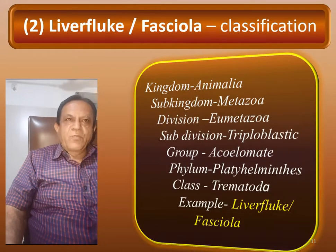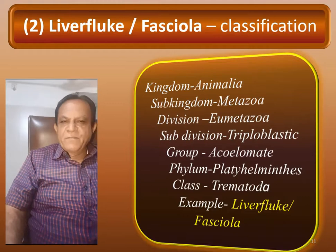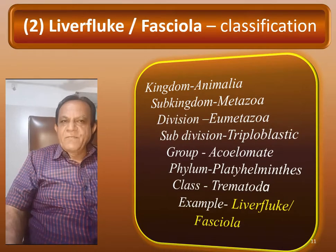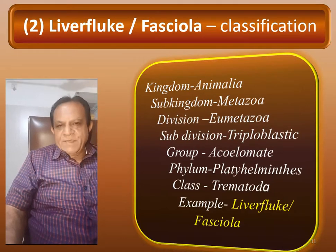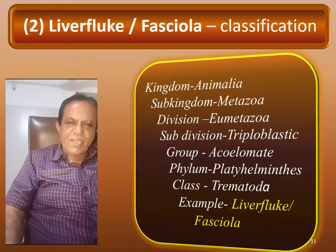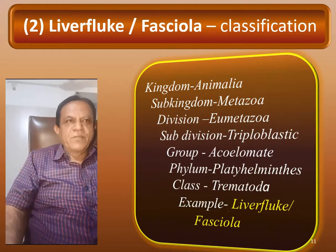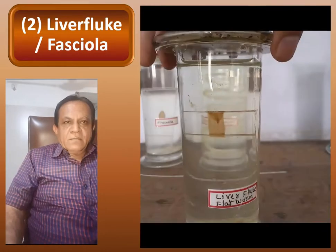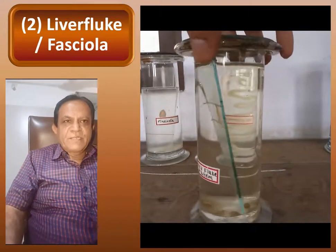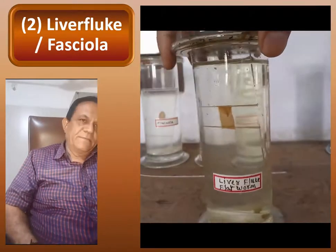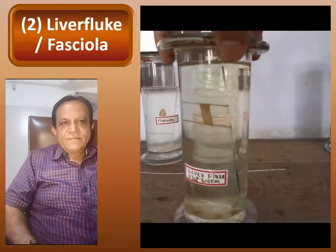Now the second animal, Liver fluke or Fasciola: Kingdom Animalia, Sub-Kingdom Metazoa, Division Eumetazoa, Sub-Division Triploblastic, Group Acoelomate, Phylum Platyhelminthes — up to this level classification will be the same for all examples. Only the class changes. So Class Trematoda, Example Liver fluke or Fasciola. This is the Liver fluke animal specimen you can see in our laboratory. The surrounding structure for identification is very easy.